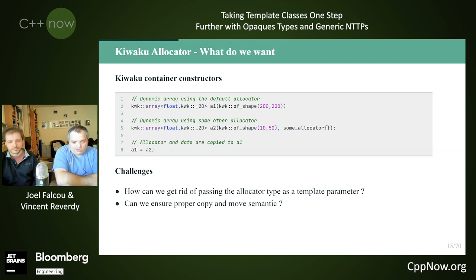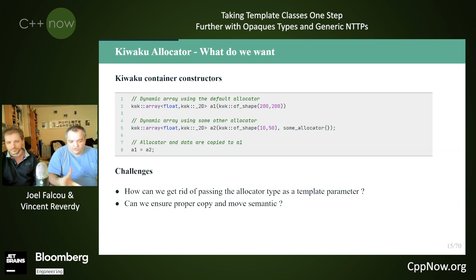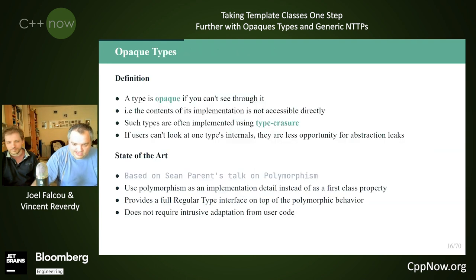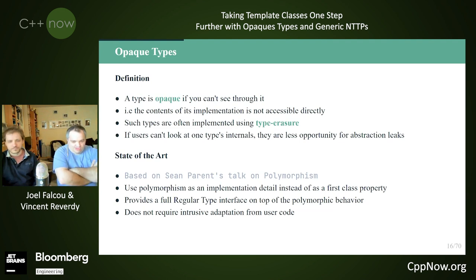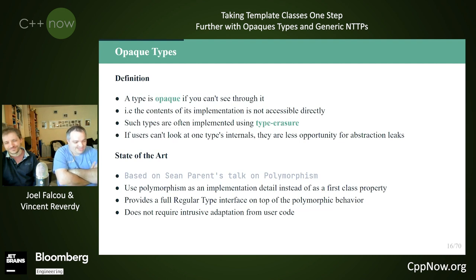What if we can just pass an allocator as a parameter to constructors and not have to deal with it in the typing, and whenever we assign or copy one array to another everything is done right? So how can we get rid of the allocator type as a template parameter and ensure everything copies or moves properly? One thing we wanted to explore for that was opaque types.